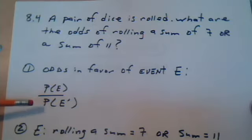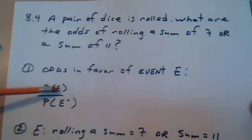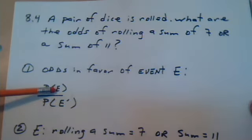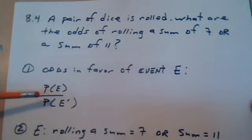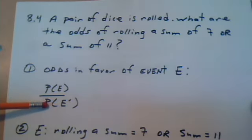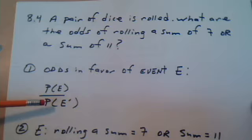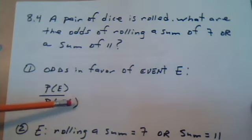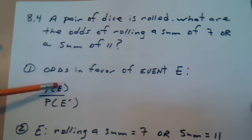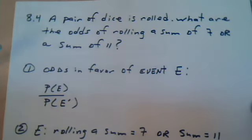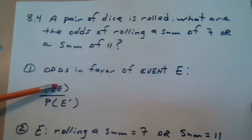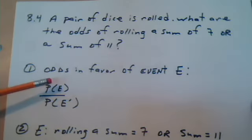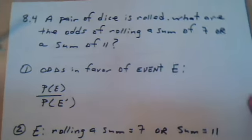Odds is made up of two probabilities: probability that a sum of 7 or a sum of 11 will fall, over the probability that a sum of 7 or a sum of 11 will not fall. That's what this prime is doing. This prime tells us it's the negation, the opposite, or not E, the opposite of this one.